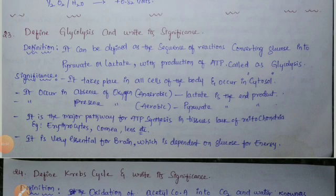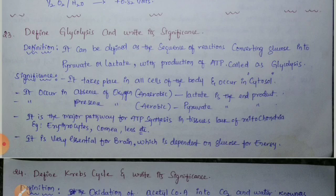Important two-mark questions from the second unit on carbohydrates and metabolism. Define glycolysis and write its significance. Glycolysis can be defined as the sequence of reactions which convert glucose into pyruvate or lactate with the production of ATP.